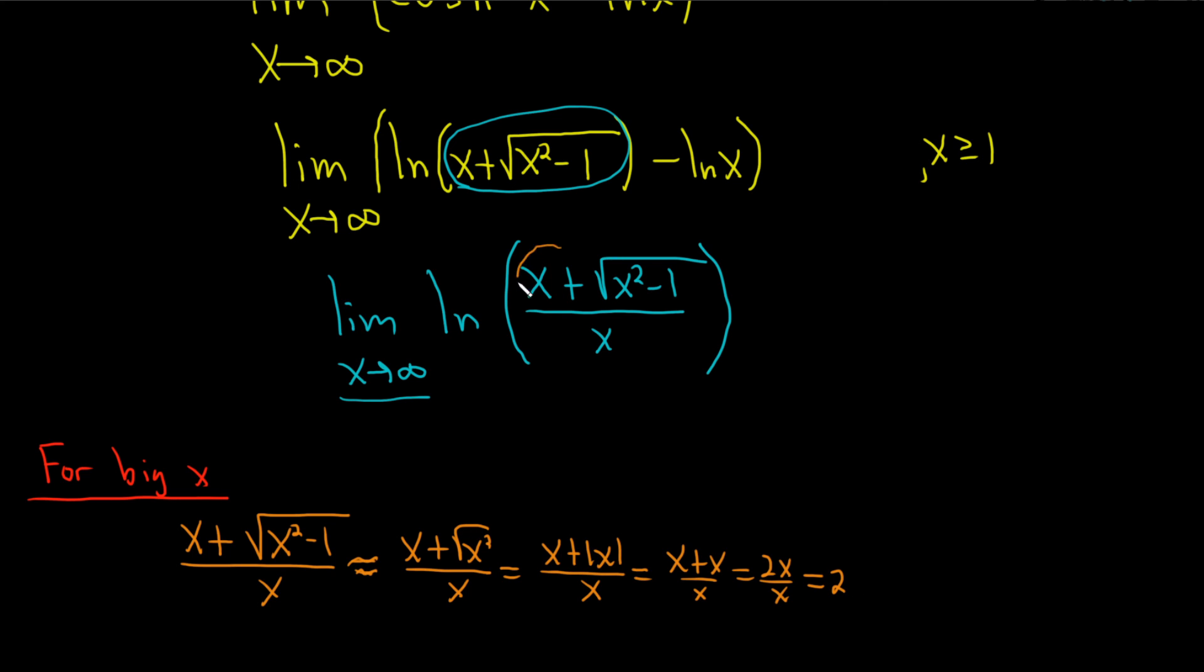So for big x, this is approximately 2. This is approaching 2. So this approaches the natural log of 2, and that's the answer.